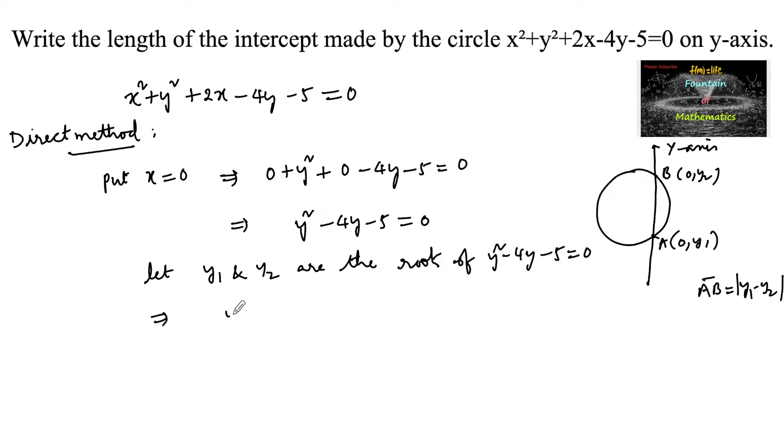Then we have sum of the roots y₁ + y₂ is equal to -(-4)/1, that is -b/a. Sum of the roots is equal to 4.